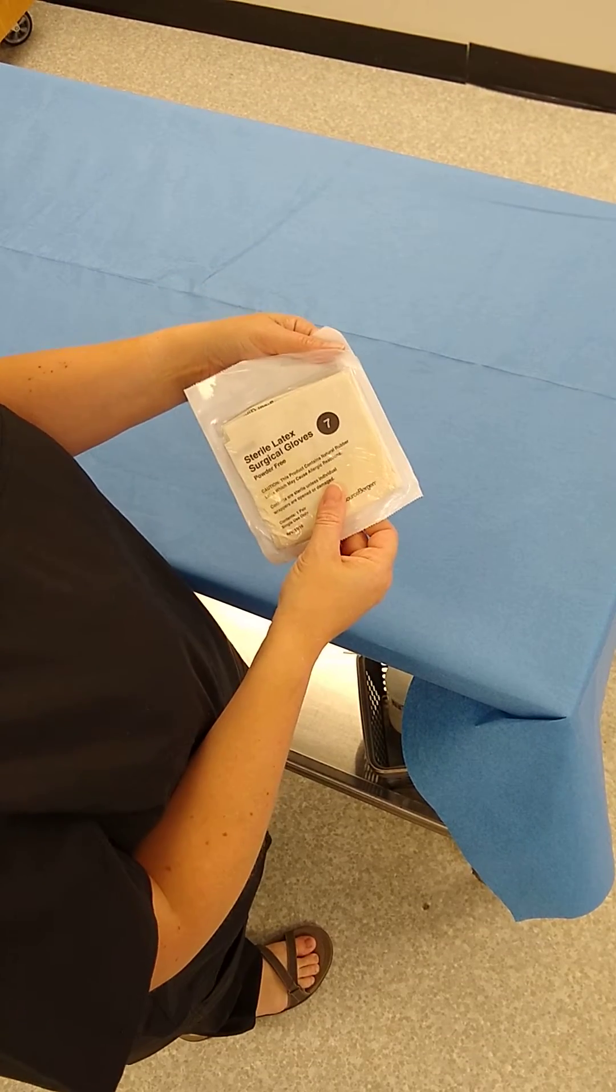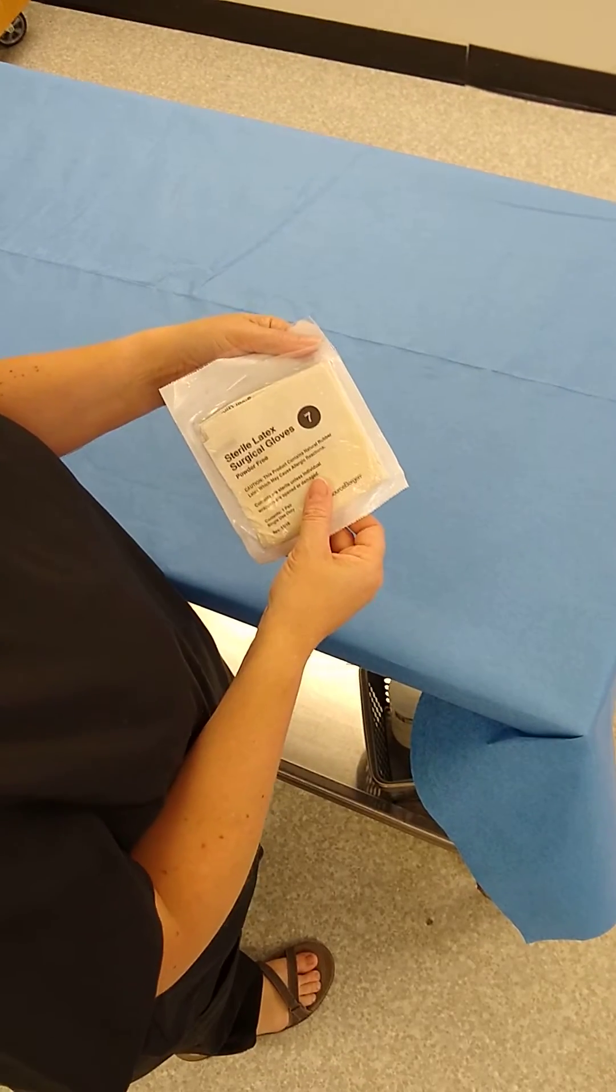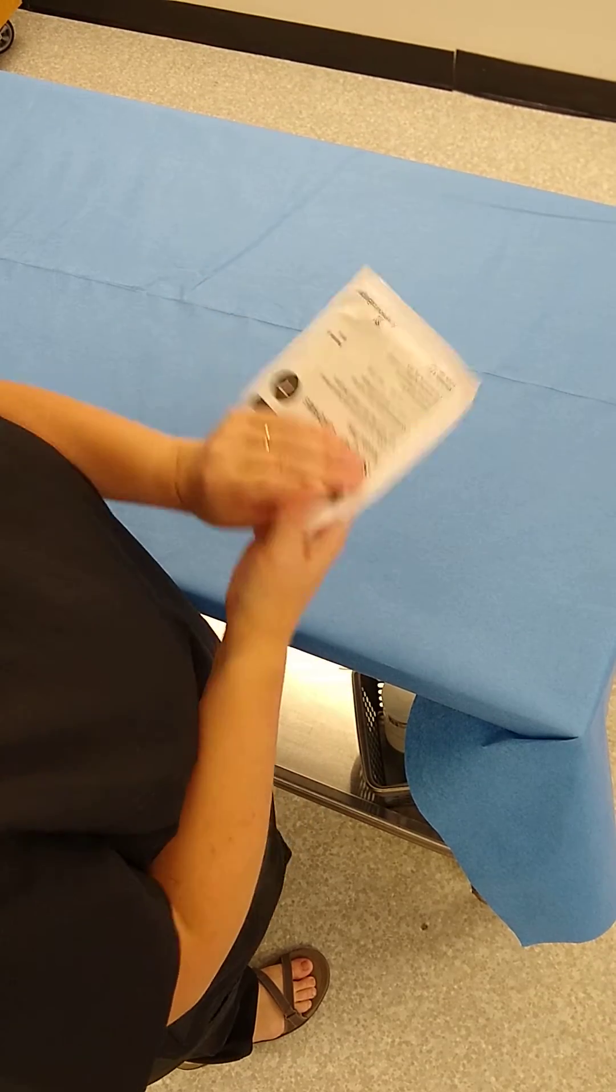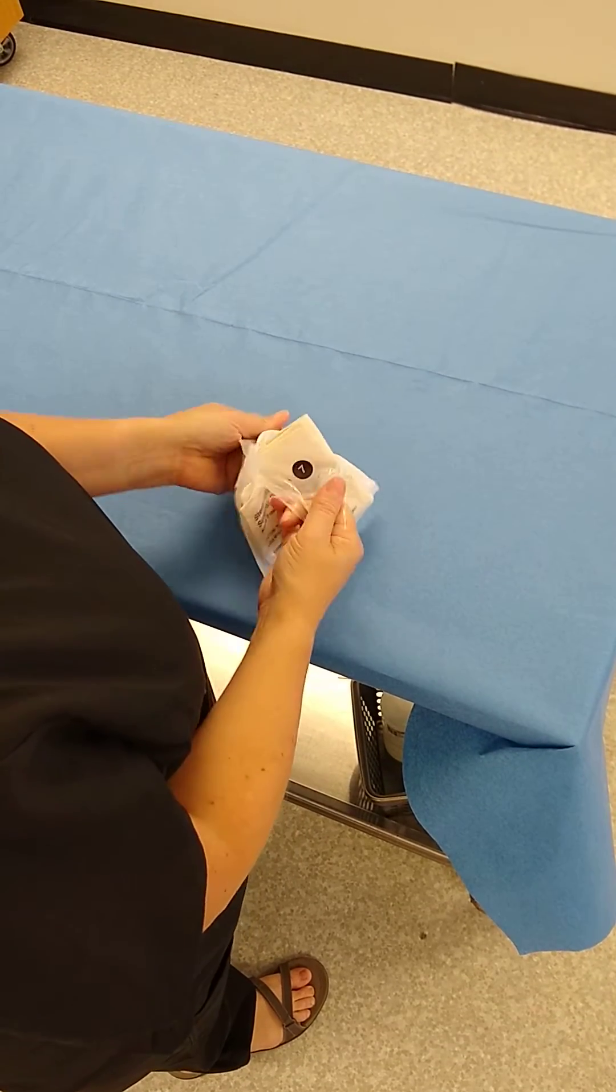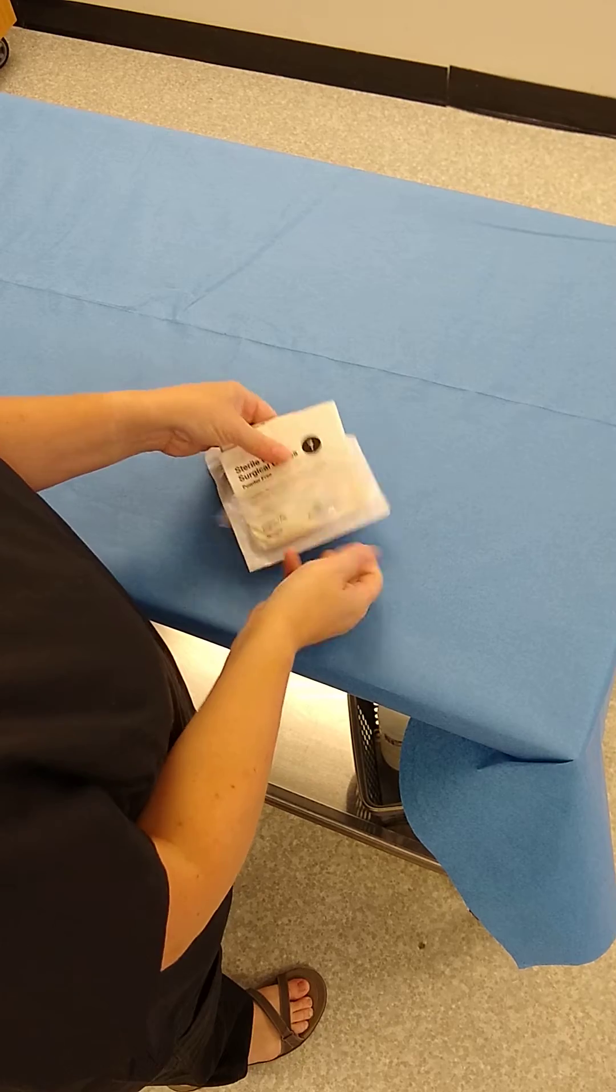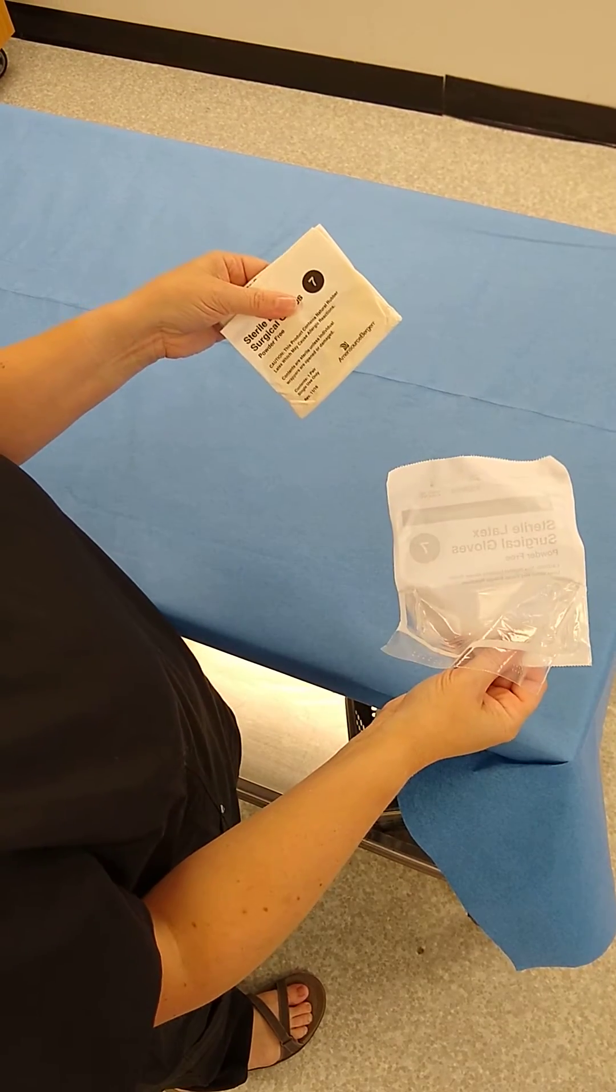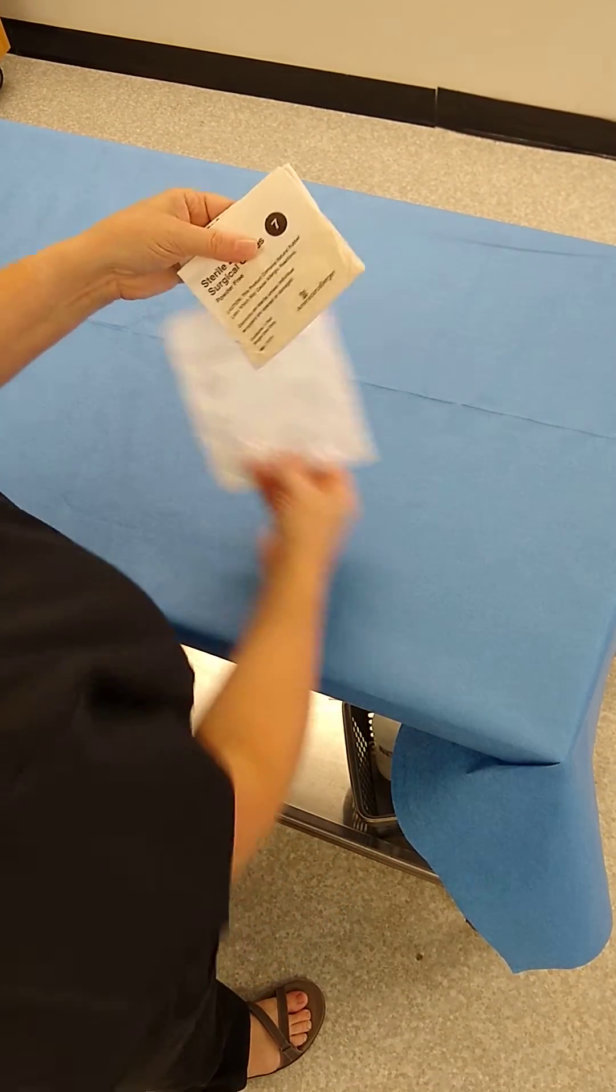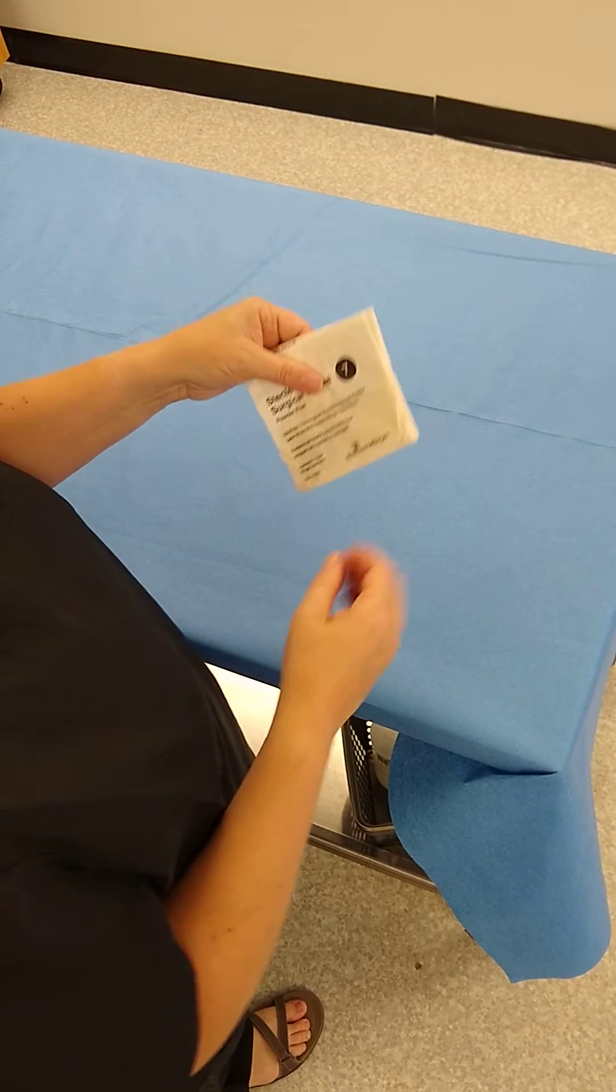Okay, we're going to demonstrate how to do an open gloving procedure. First, get your package of gloves and peel this part off. I'm not worried about contamination at this point as long as I keep them in my hands. If you drop this on the ground, you have to start over.